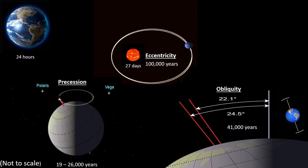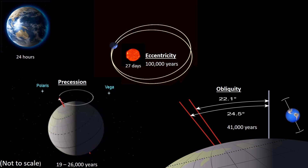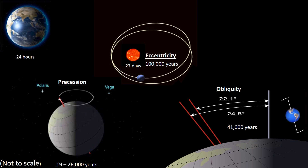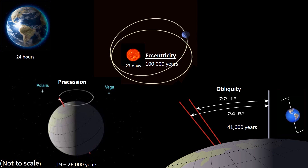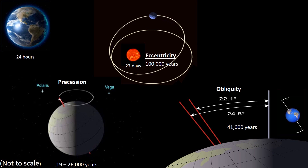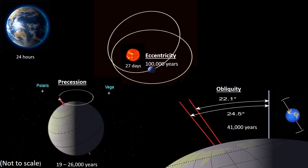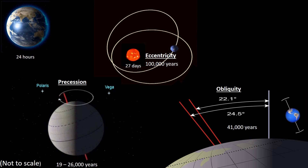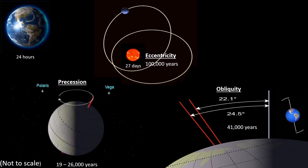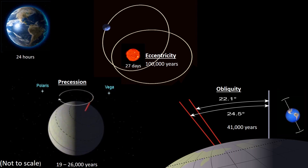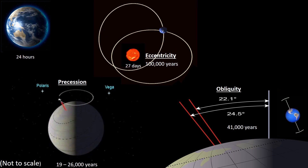The Earth also goes through a cyclic wobble. It moves from its current position of the North pointing to the star Polaris, to where the North points to the star Vega, and returns to pointing at Polaris. The full cycle takes place between 19,000 to 26,000 years.